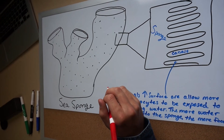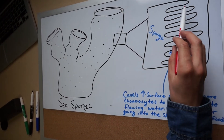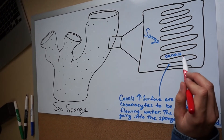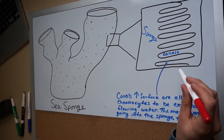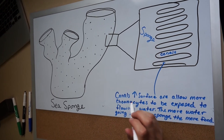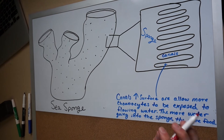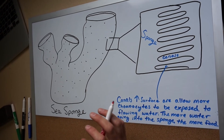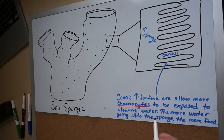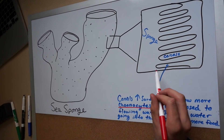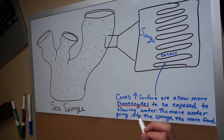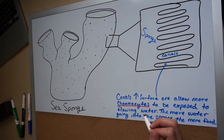On the surface of each sponge there are tiny canals, and their purpose is to increase the sponge's surface area. Sponges need a lot of surface area because they want as much water as possible flowing through their systems and being exposed to each choanocyte. The more surface area it has, the more choanocytes are exposed to water — and in the water are the nutrients that the sponge needs to absorb.